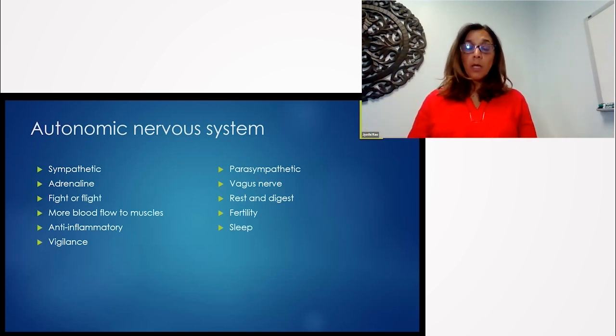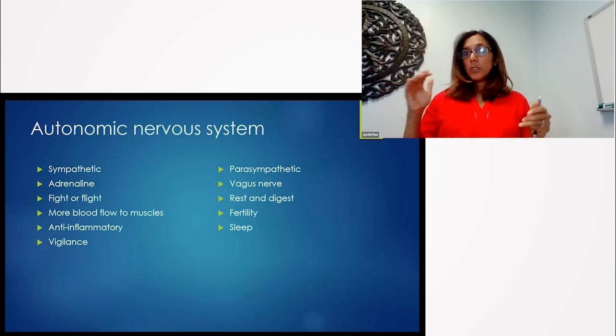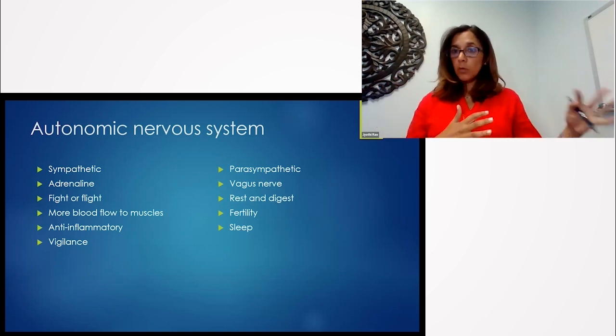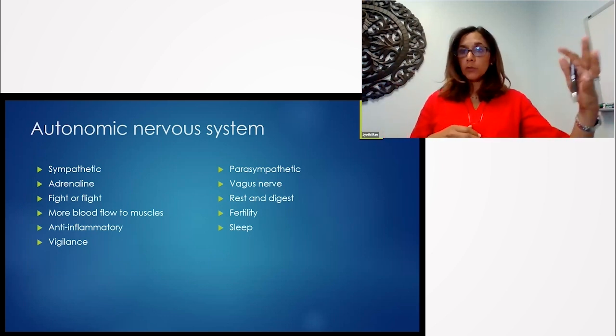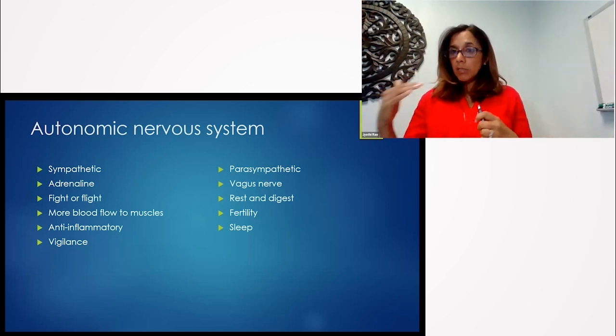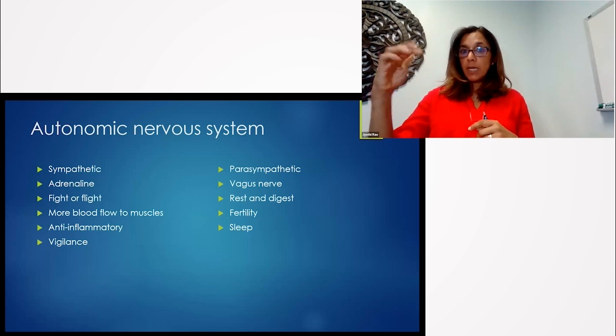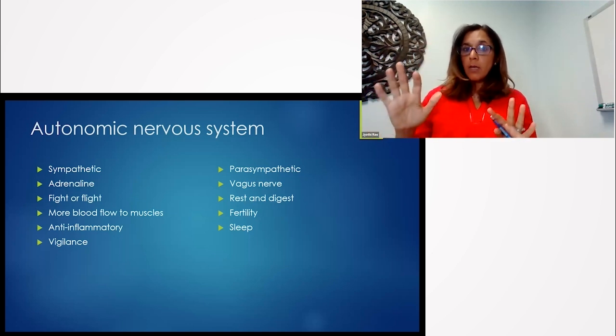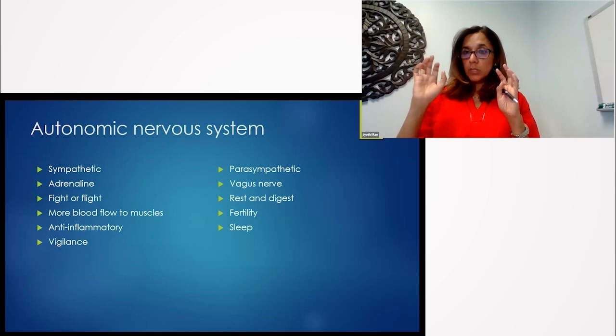It's also increasing vigilance because our pupils dilate. When we're running from a tiger, we don't want to be sleeping, we don't want to have to go to the bathroom, we don't want to urinate, we don't want to reproduce. When our bodies are constantly under threat, we need to signal that system to say, 'You know what, things are okay.'